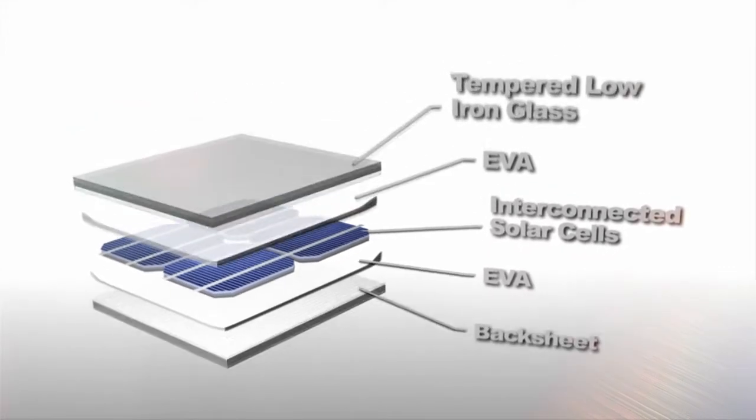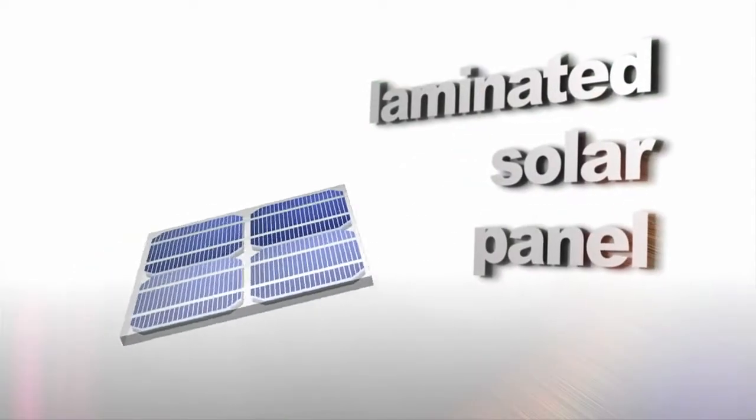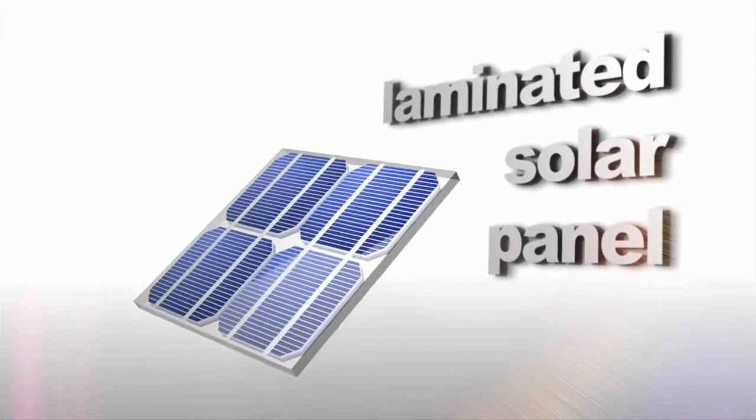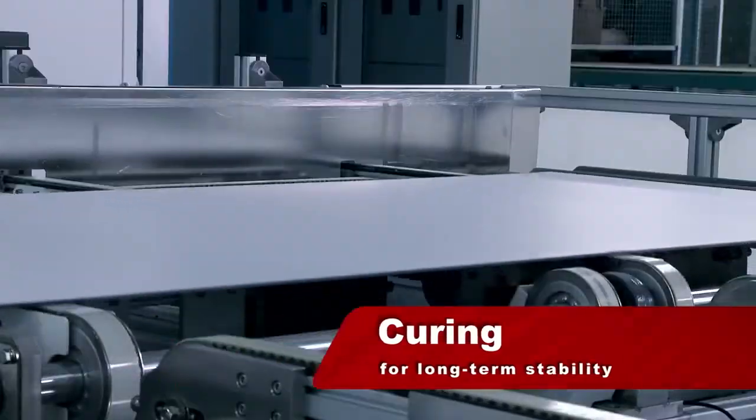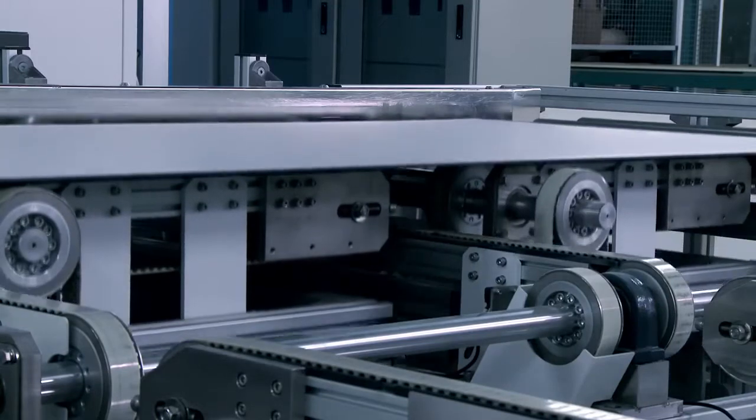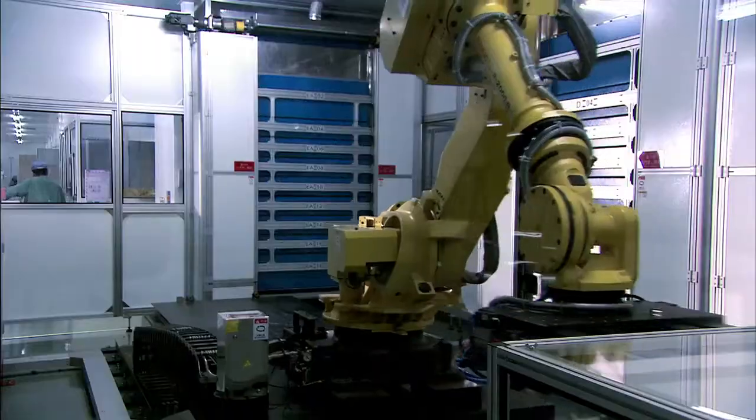This sandwich structure is laminated to protect the solar cell from moisture and mechanical shock. The laminated cells undergo a process of preheat, heating, and cooling, causing cross-linking of the EVA to form a chemical bond which hermetically seals the module.